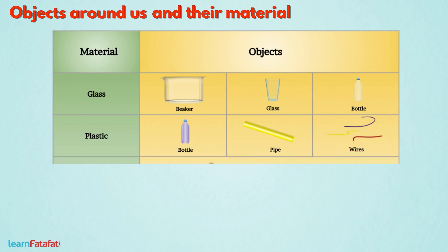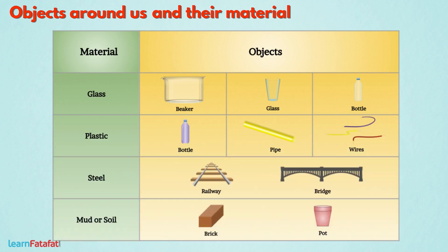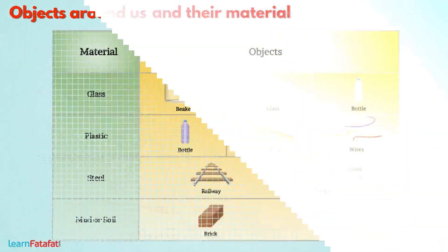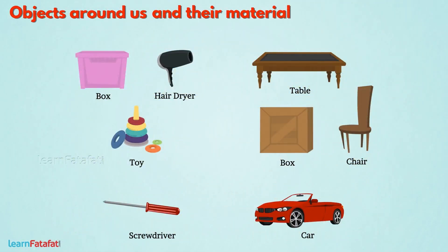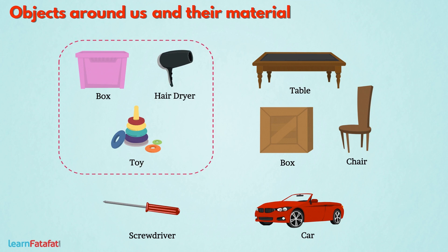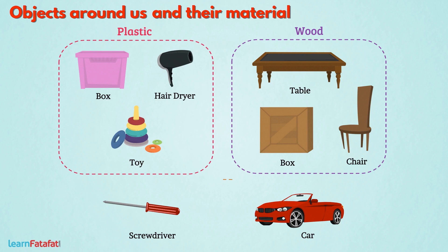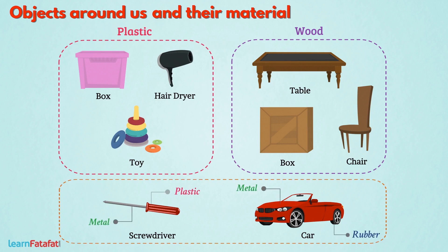Here is a table showing some of the materials and things produced from them. To classify objects, we identify the materials from which they are made. For example, these are the things made of plastic, these are made of wood, and these are things made from a combination of more than one material.